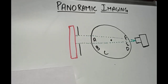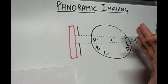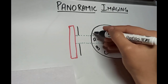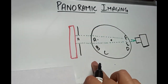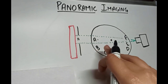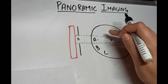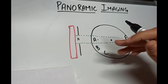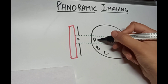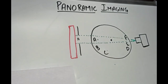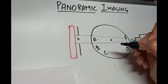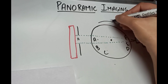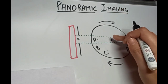Let's see the formation of the focal trough in a panoramic machine. Suppose we have to take the x-ray of object A — we simply shoot the x-ray, the beam passes through object A, and we get the image on the receptor. But in panoramic imaging we need to take the x-ray of multiple objects — A, B, and C — to receive a single wide image. So we have to move the disk, rotating it so that the beam passes through all three objects.